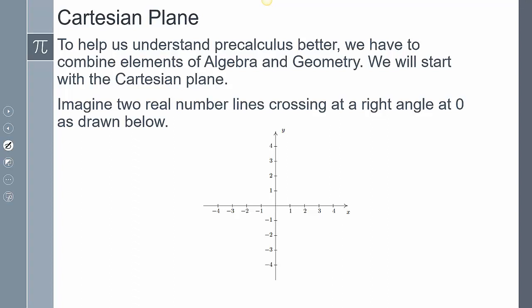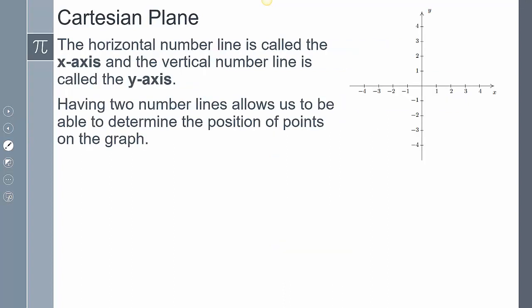To help us understand precalculus better, we're going to be combining elements of algebra and geometry together. The first thing we're going to examine is the Cartesian plane. The way we should imagine this is two number lines crossing, and the right angle formed is where both of those number lines are going to be 0. The horizontal one is the x-axis, and the vertical line is the y-axis. Having these two axes allows us to determine position on the graph.